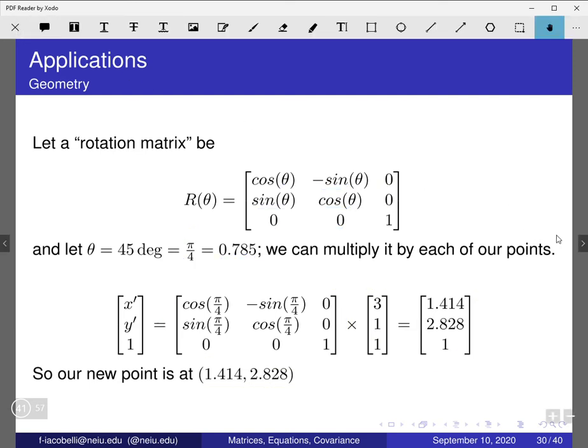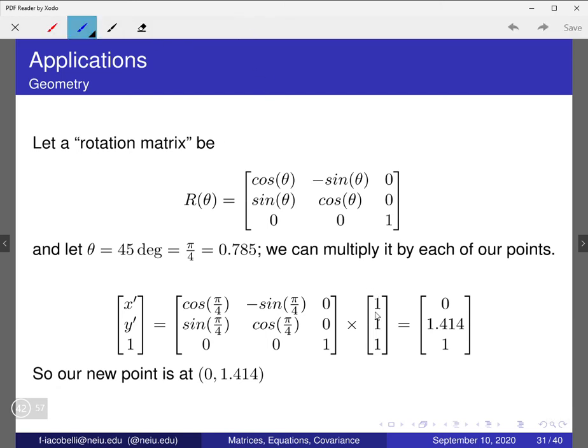Now, let's look at my other point, if I do the same thing. Here's the same idea. Now, I am multiplying my point (1, 1). This was my second point. And if I multiply by the same matrix, right? I get 0 here on my x, and I get 1.414 on my y, right? And this one at the bottom is always there. So, my new point is going to be (0, 1.414).